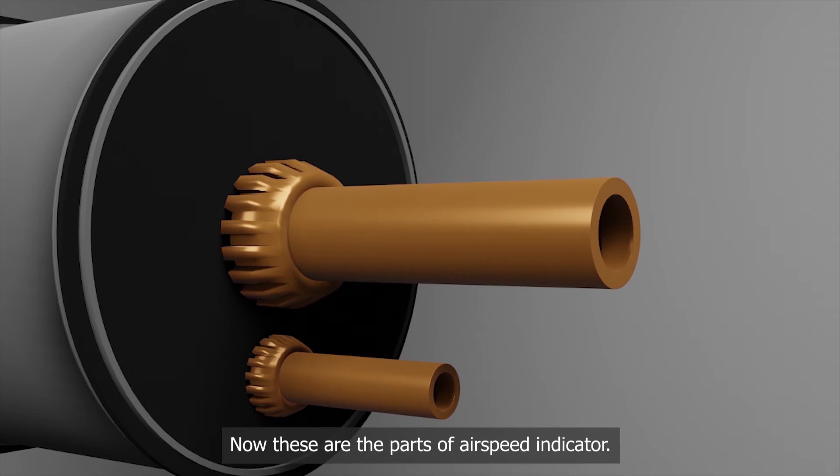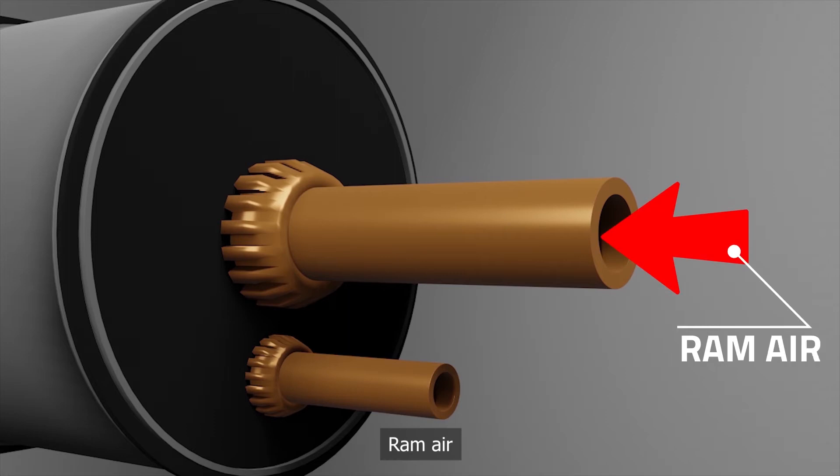Now, these are the parts of airspeed indicator. Ram air. It is the air which is forced to enter a moving aperture, such as the air intake of an aircraft.